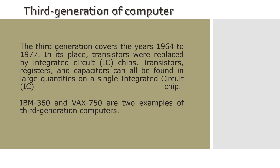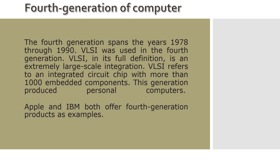Examples of third generation computers are the IBM 360 and VAX 750. Now let's talk about the fourth generation of computers. The fourth generation spans the years 1978 through 1990. VLSI — Very Large Scale Integration — was used in the fourth generation. VLSI refers to an integrated circuit chip with more than 1,000 embedded components, and this generation produced personal computers. Apple and IBM both offer fourth generation products as examples.